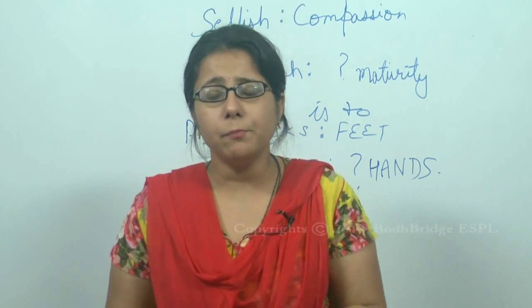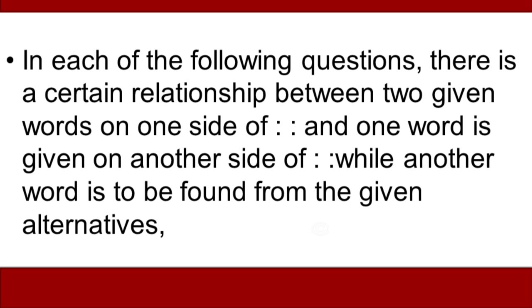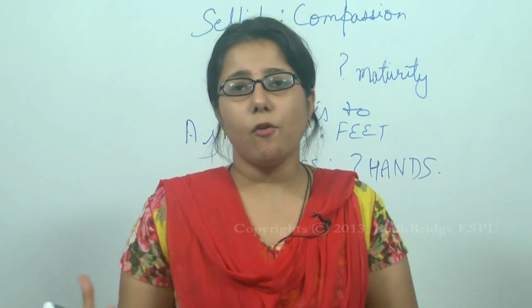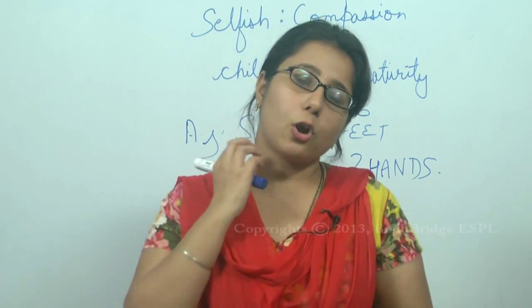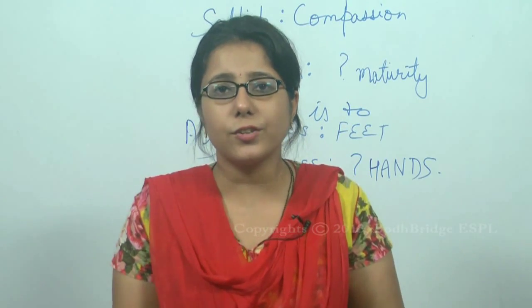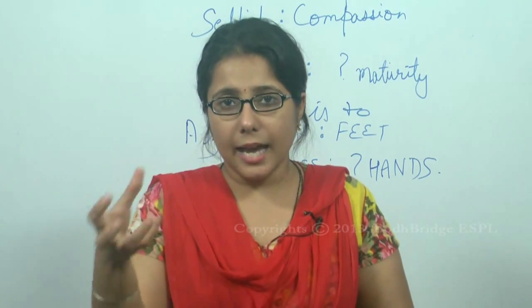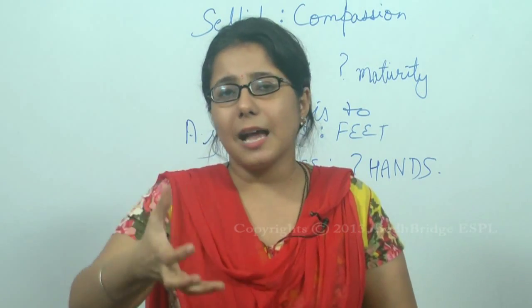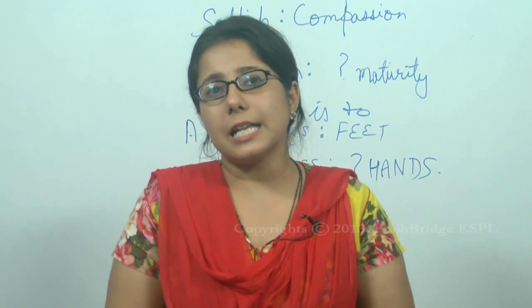Now coming to the format. Different kinds of patterns are asked, but this pattern is very common: in each question there is a certain relationship between two given words on one side of the colon, and one word is given on the other side of the colon, while another word is to be found from the given alternatives having the same relationship. Choose the correct alternative. In this topic I will cover different types of analogy questions: alphabet analogy, detecting the analogous pair, completing the analogous pair, and multiple analogy — with two, three, or four examples of each type asked in exams.